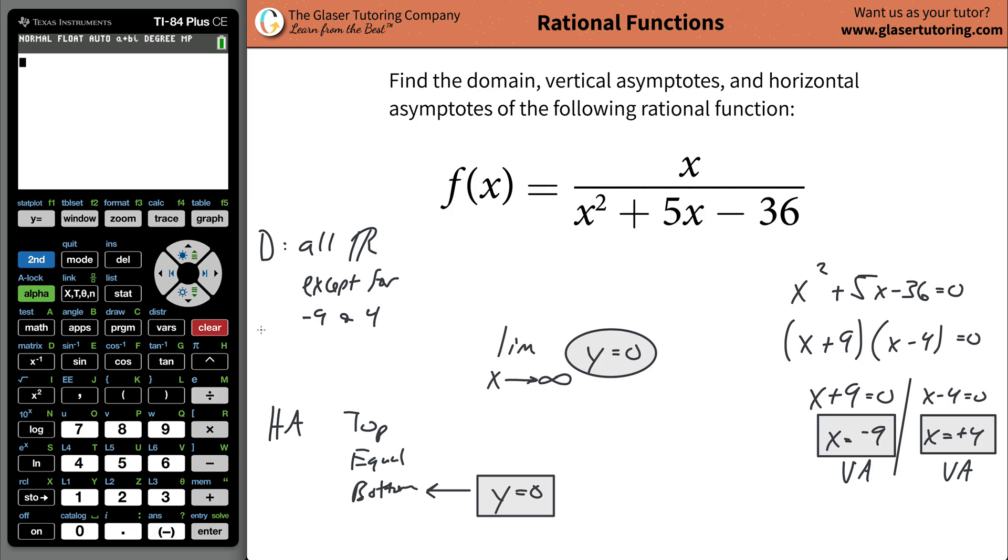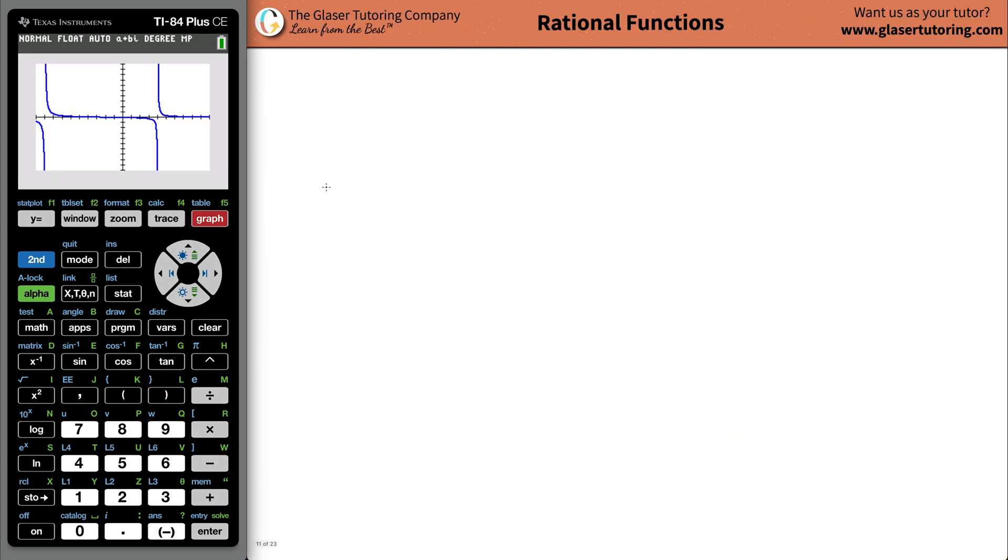Now, what we can do is, so that takes care of it. But you can always double check with your calculator. And it's always good to see this visually. So plug the function in. x divided by now parenthesis. x squared plus 5x plus 5x minus your 36. Close parenthesis. Hit graph. And let's take a look at this.